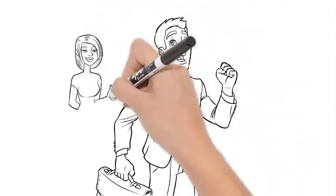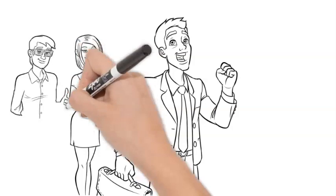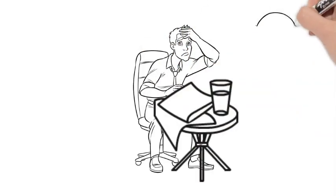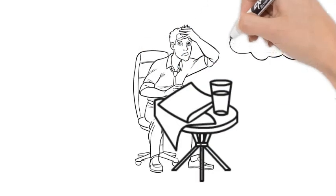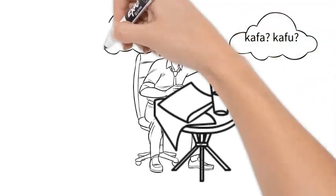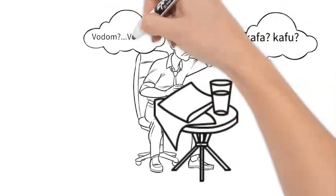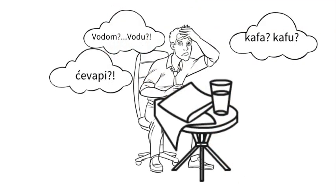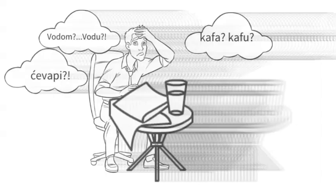Hello guys, and welcome to the new video! You've been in Serbia for a while now and you're studying the language, but you are still not able to order a drink in a cafe or food in a restaurant. You spent a lot of time learning grammar, but you feel bad because you still can't speak the language. In this video, I will share some basic words which will help you when ordering a drink at a cafe or a restaurant.